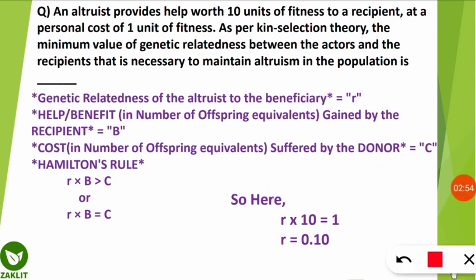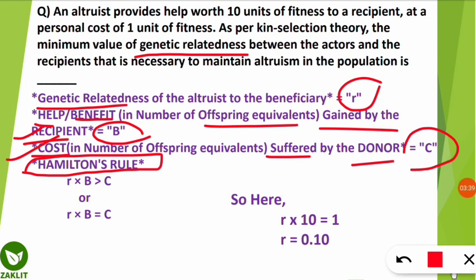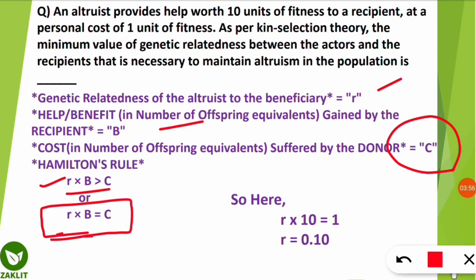Genetic relatedness is denoted as small r. The benefit or help gained by the recipient is denoted as capital B — it can be measured in number of offspring equivalents. The cost to the donor — how much fitness they lose — is denoted as capital C. This formula is governed by Hamilton's Rule, which states that r × B must always be greater than C.